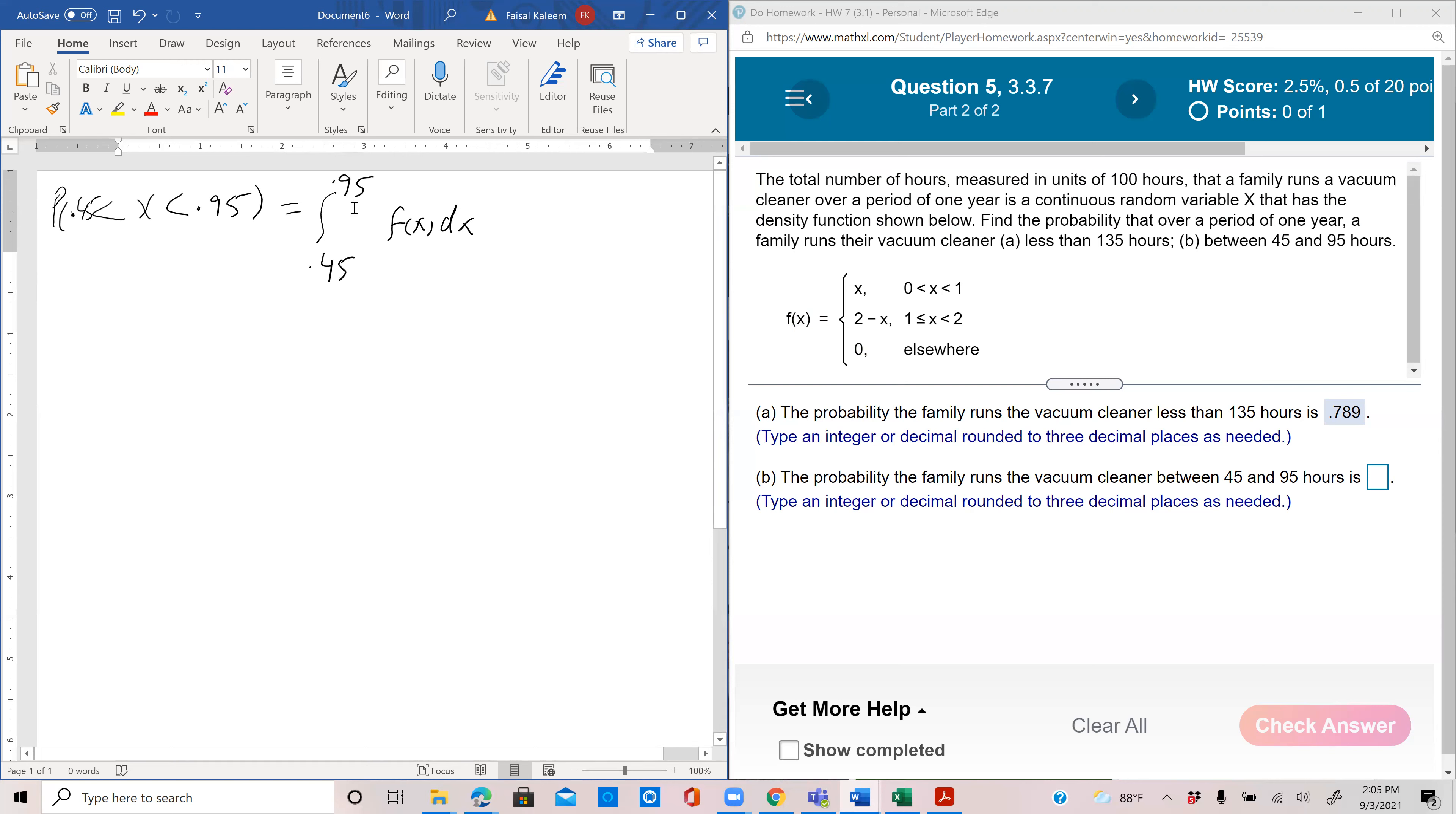Between 0.45 and 0.95, both of these are between 0 and 1, so actually in this case it's just this definition that applies. fx is equal to x in all this range, so you get x squared by 2. That'd be 0.95 squared by 2 minus 0.45 squared by 2. Let's see what that is. It's 0.35.